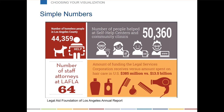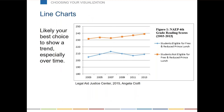Basics like simple numbers — numbers have a real place, including illustrated numbers as shown here from the Legal Aid Foundation of Los Angeles. Line charts: if you have a trend, especially over time, then almost certainly you want a line chart. If things are ordered and you can put the x-axis in order, you should use a line chart. If things are not ordered and you cannot do a line chart, you probably want to use a bar chart — they're usually the best way to do something that isn't a line chart.